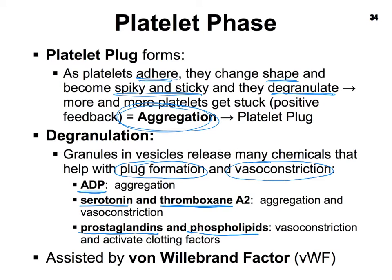I must mention that the platelet phase is very dependent on a clotting factor we refer to as the von Willebrand factor. If a person does not produce enough von Willebrand factor, they cannot really stop the flow of blood very well. Or if they have too much of it, they will form too many clots. A person that doesn't clot well suffers from hemophilia. This leads us to the next phase: the clotting phase.